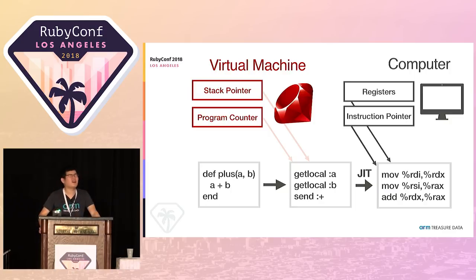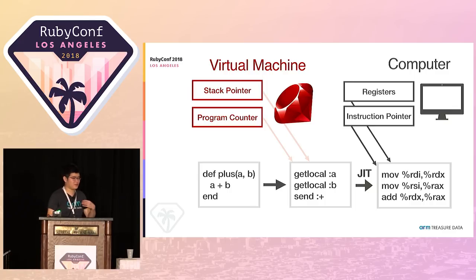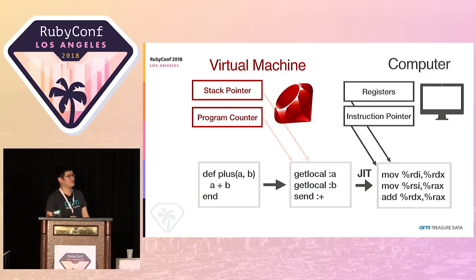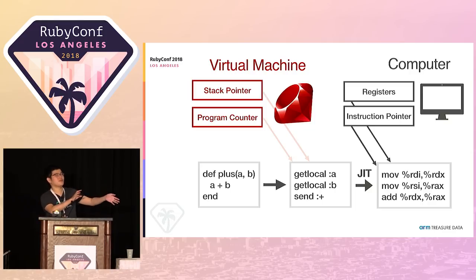Q: Is there a way to compile all methods or just specific methods? Previously in my earlier experiment, I implemented a method to specify which method to be JITed, but it would complicate usage. I intentionally avoided introducing that. Currently it's all-or-nothing. In the future, it will be all by default and optionally disabled.